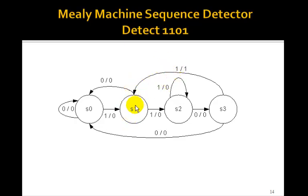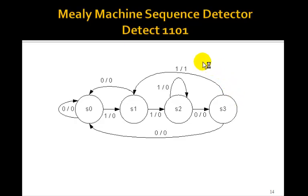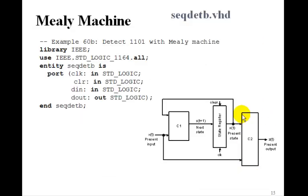There's a potential problem: as soon as we get to state S1, the output always shows as 0 because it depends on both state and input. If we detected the sequence 1, 1, 0, 1, we get a 1 on the way to state S1, but as soon as we arrive there, it immediately goes back to 0. So we really can't tell if we've detected the sequence. What we need to do is latch this 1 into an output register in what used to be the combinational module C2. So this one really needs to be a sequential circuit now, which will latch it.